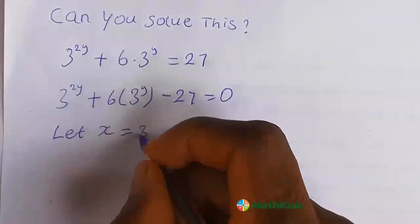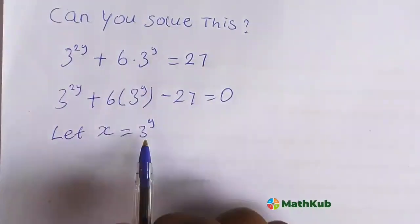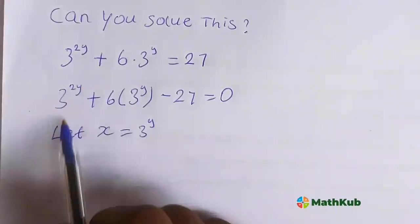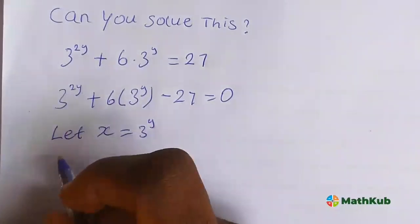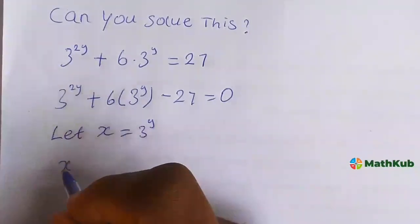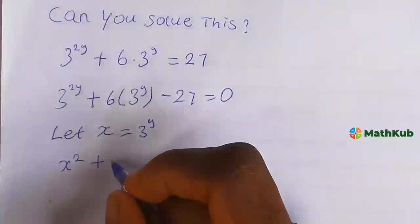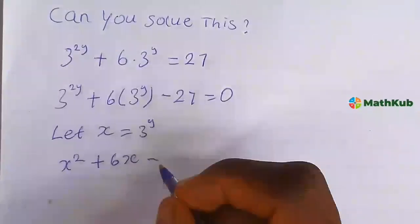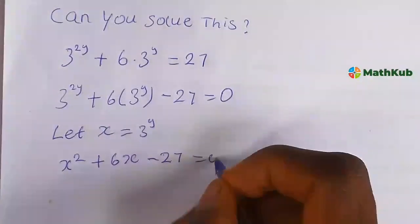Let x be equal to 3 to the power of y. This is 3 to the power of y, so this place is simply, since x is 3 to the power of y, this is x squared plus 6x minus 27 equal to 0.